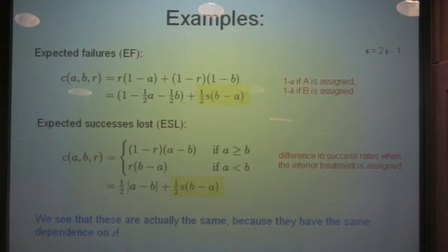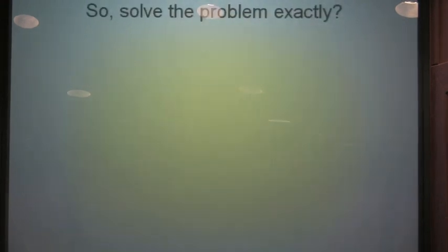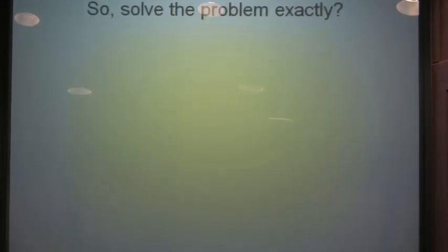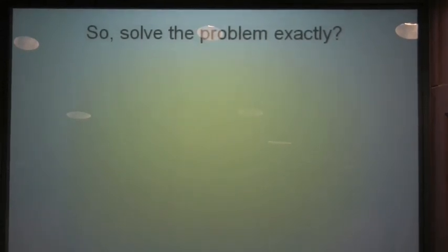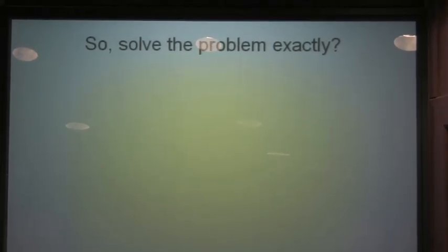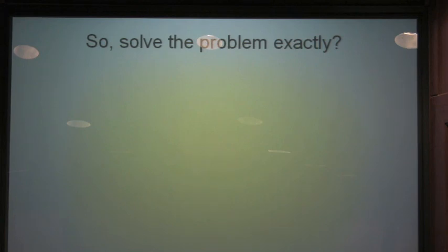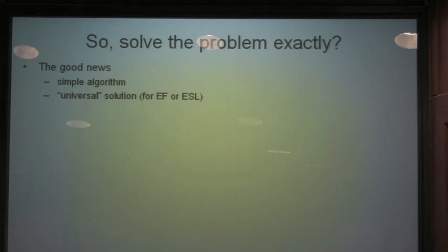So there's, you can see where, when we view it in this light, we can see some non-obvious things. So why not solve this problem exactly? I mean, are we there yet? I've told you how to frame the problem. I've told you that there's this backward recurrence solution. Why don't we just get going and use it? So the good news is, it's a simple algorithm, and it's a pretty universal solution to the ethics. I mean, you can write down other principles, and almost all reasonable things you write down will sort of collapse to something equivalent to either expected failures or expected successes lost.